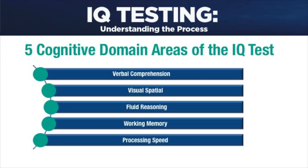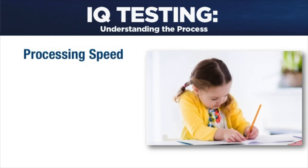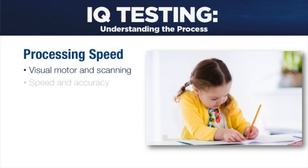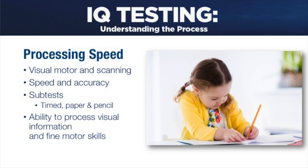The fifth and final domain area is called processing speed. Processing speed is a combination of multiple skills working together: visual motor, visual scanning speed, and accuracy. The subtests within the processing speed domain are timed and mainly paper-pencil. Processing speed provides a measure of the student's ability to process simple or routine visual information combined with fine motor skills within a short time frame.